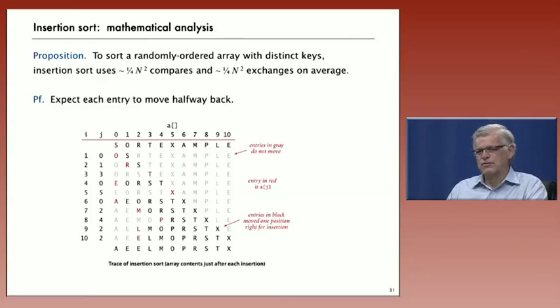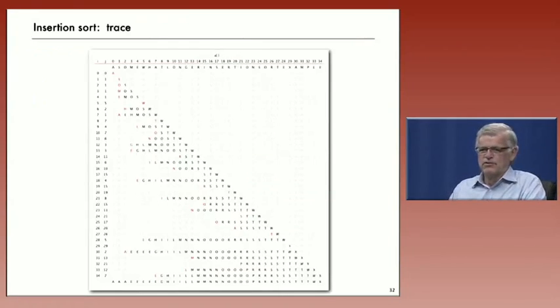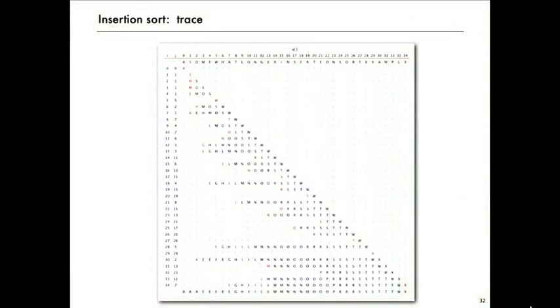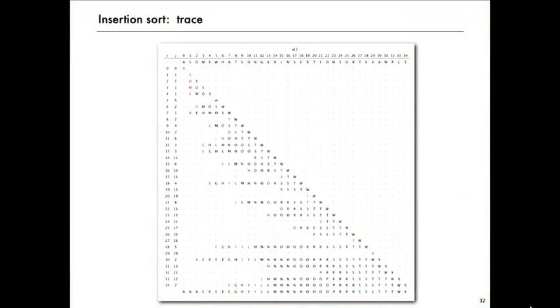The analysis, exact analysis is not much more detailed than that. This is a bigger trace that shows, again, about half the elements below the diagonal are involved in the sort.